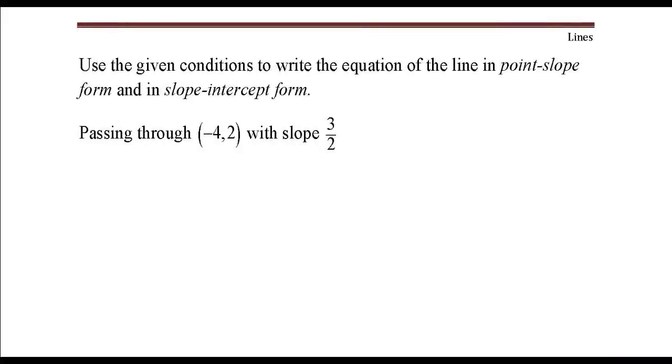We want to write the equation of a line in both point-slope form and slope-intercept form. This line is going to pass through the point negative 4, comma 2, and have a slope of 3 halves.